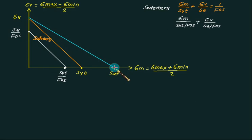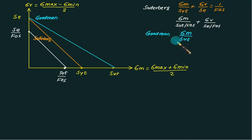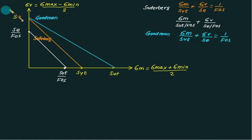If you join SE on the Y axis with SUT on the X axis, this criterion is called the Goodman criterion. Since it is a straight line, we use the same intercept equation: sigma_m / SUT + sigma_v / SE = 1 / FOS.